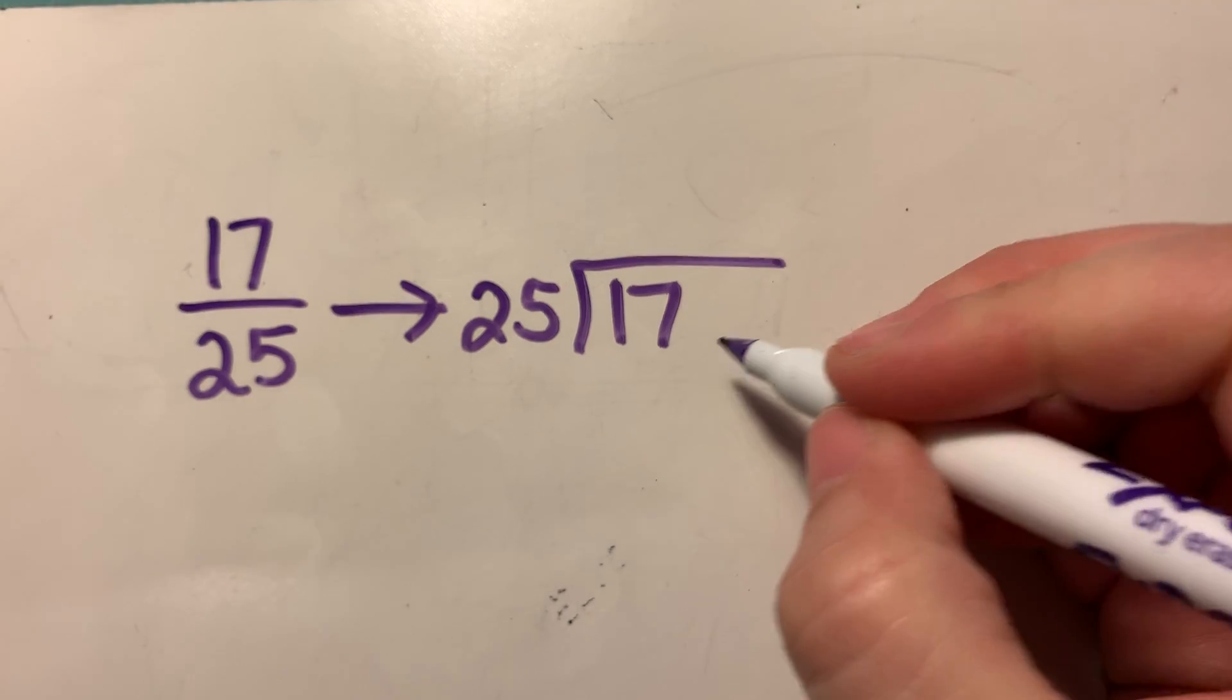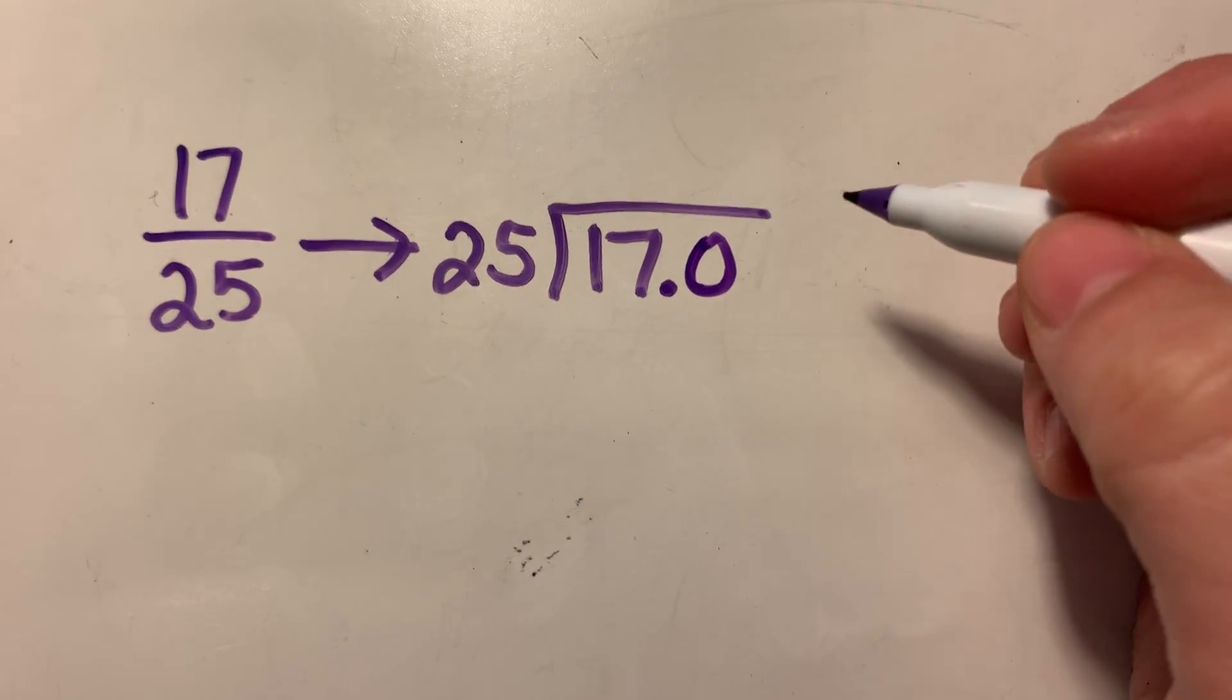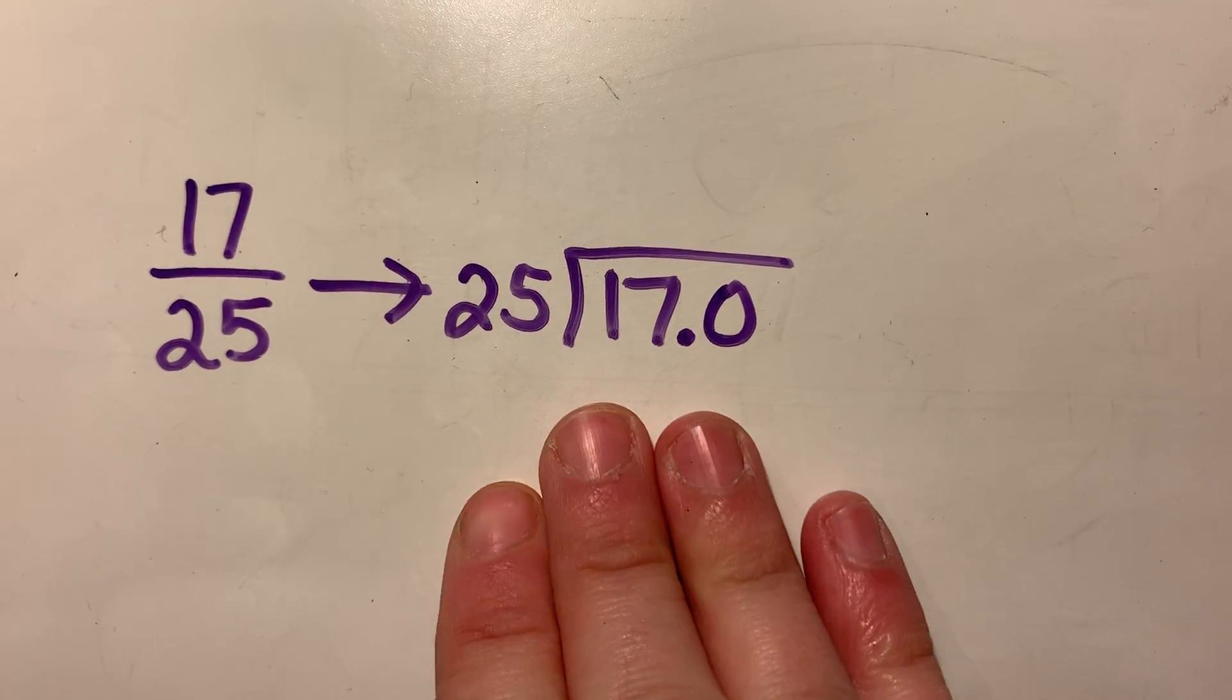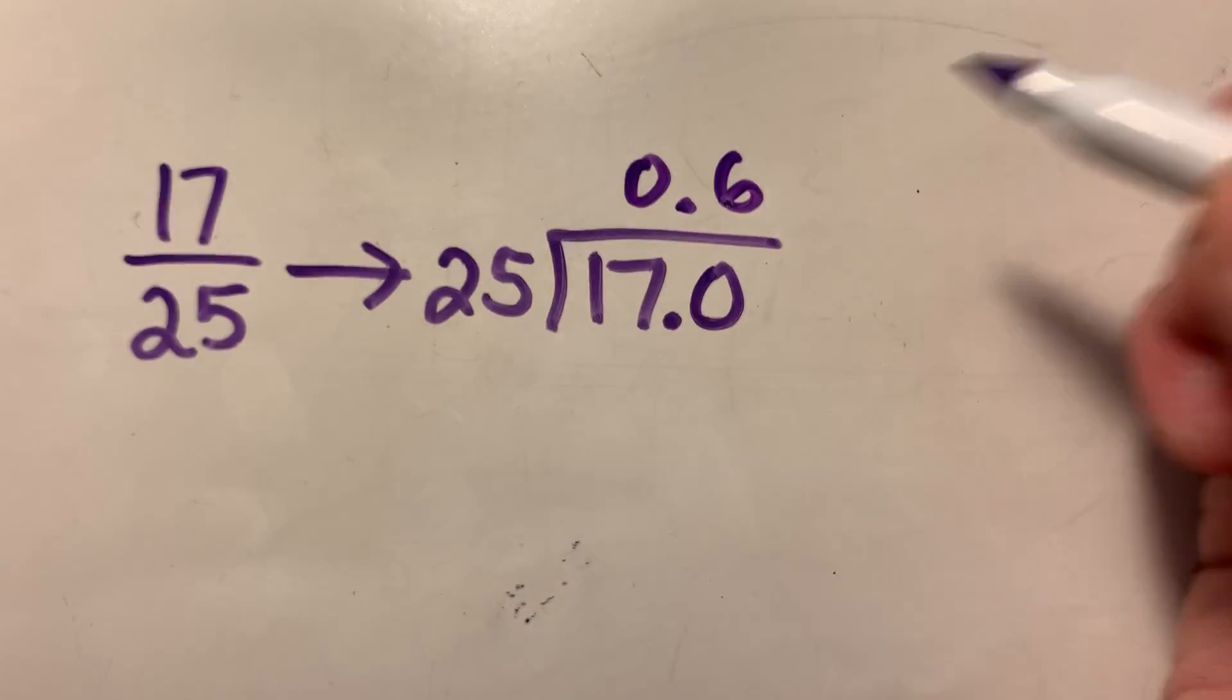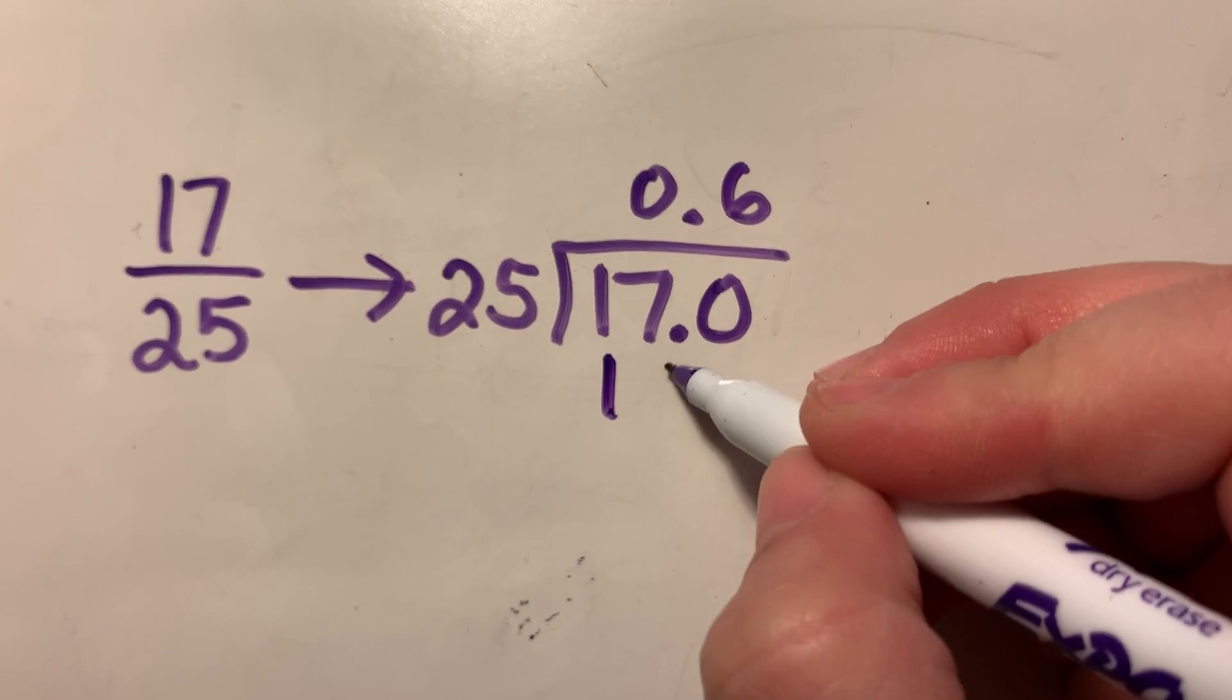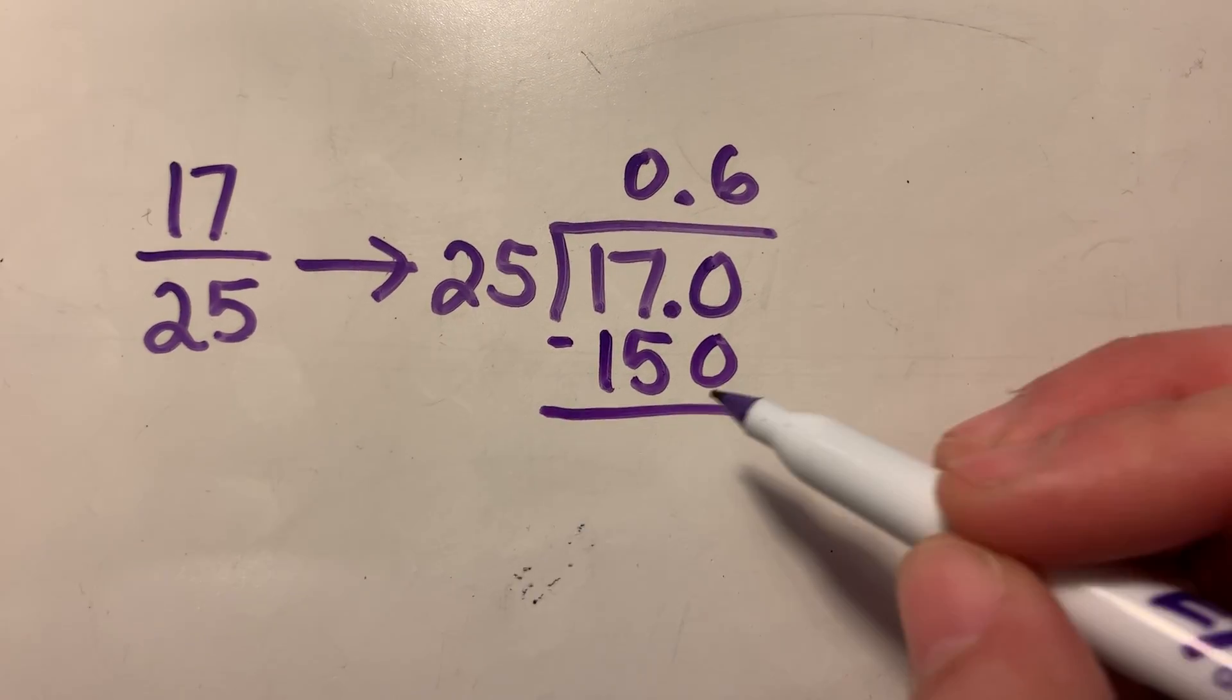So 25 does not go into 17, but it can go into 170. So four, let's see, 25 times four is a hundred. And then 150 at 150 is going to be the closest. So six times, everyone good. Everyone good with that? Six times. That gives me 150.